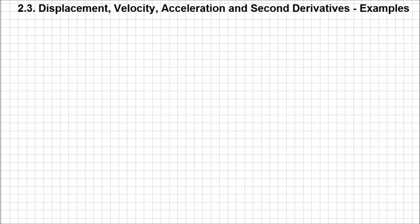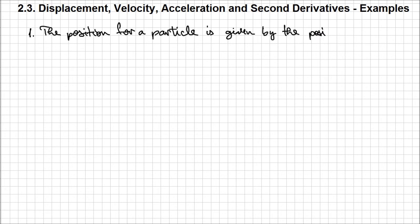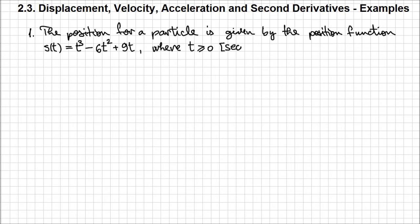Let's have a look at another example in which we're going to use the second derivative and the connection between displacement, velocity, and acceleration to analyze the behavior of a moving particle. The position of the particle is given by s(t) = t³ - 6t² + 9t, where t is the time in seconds and must be positive. The distance given by the position function is measured in meters.